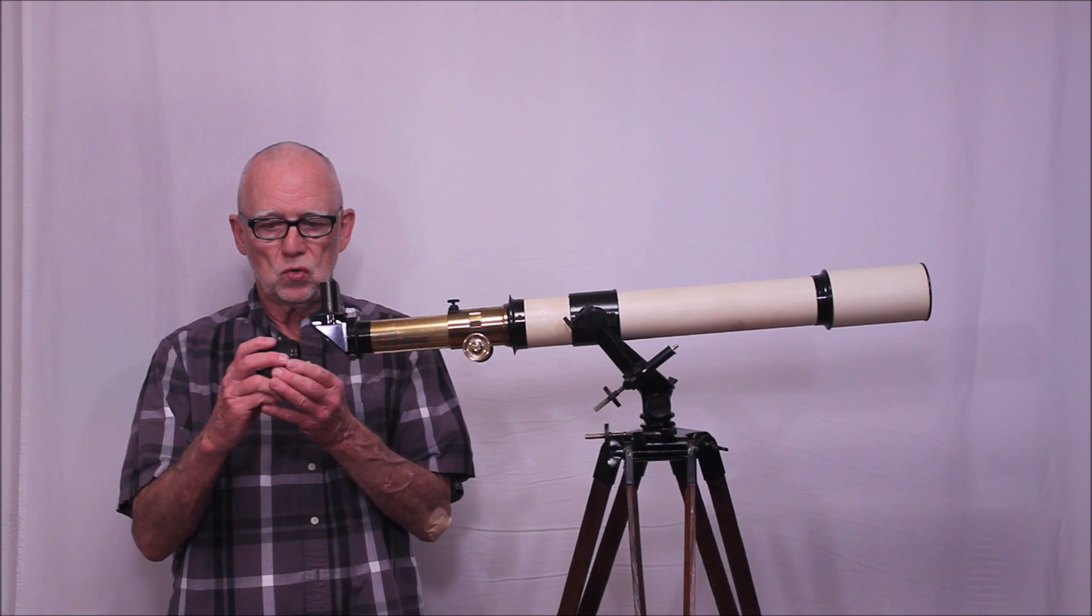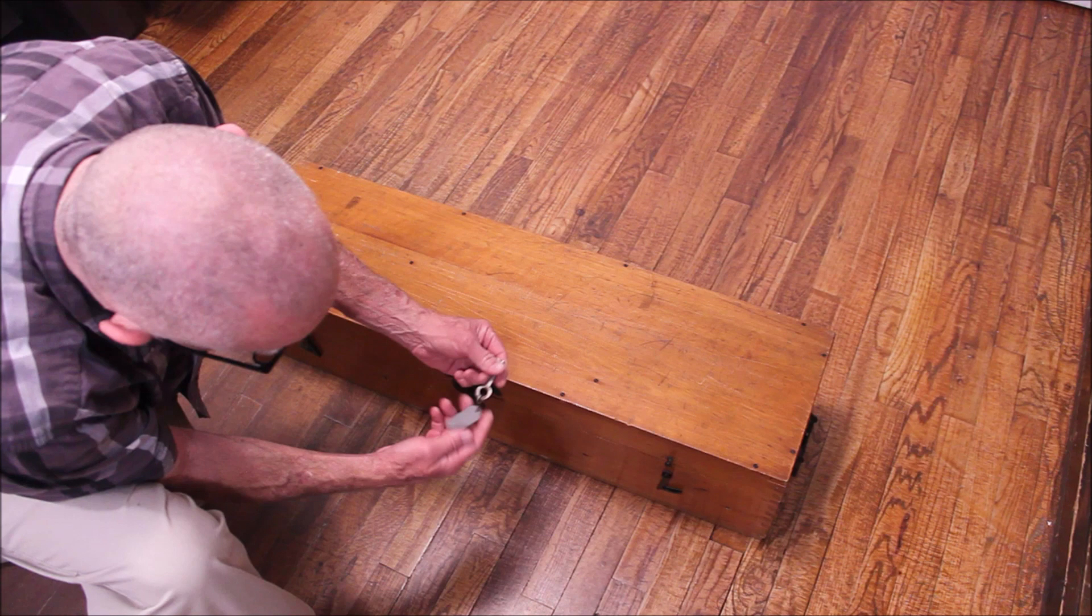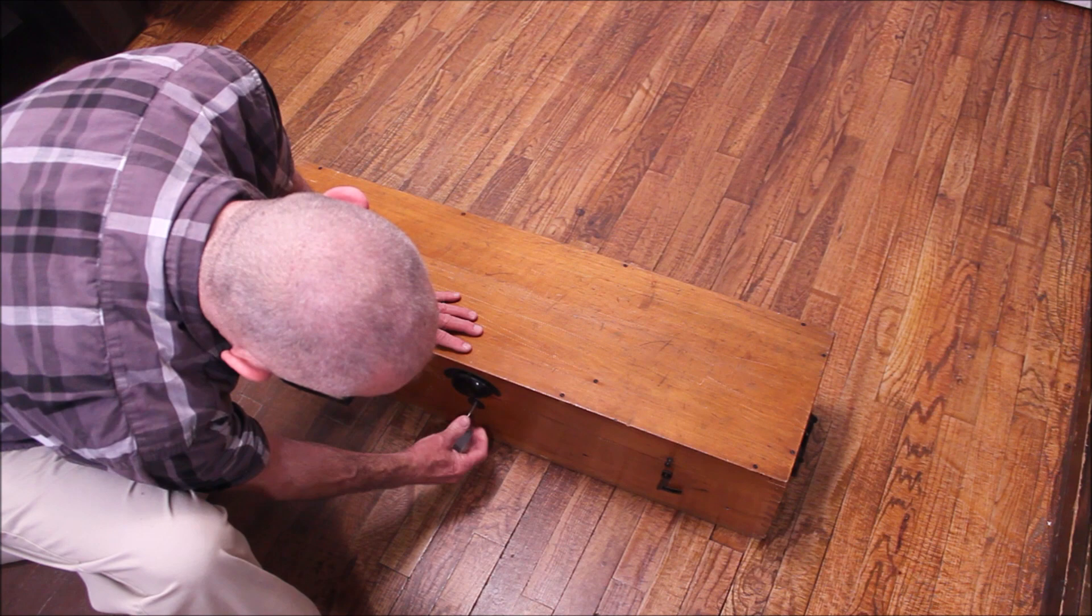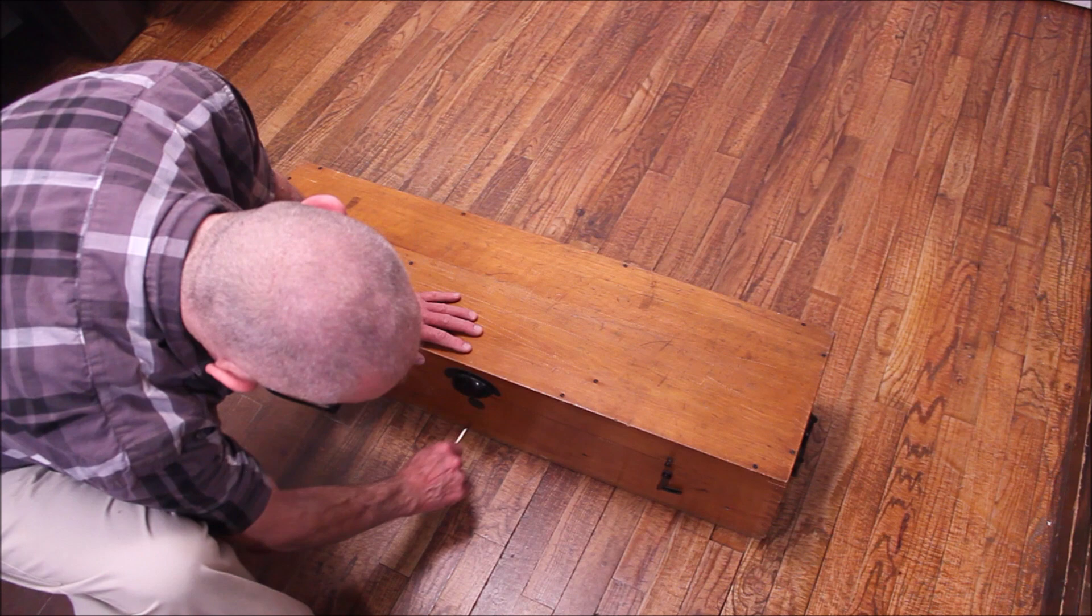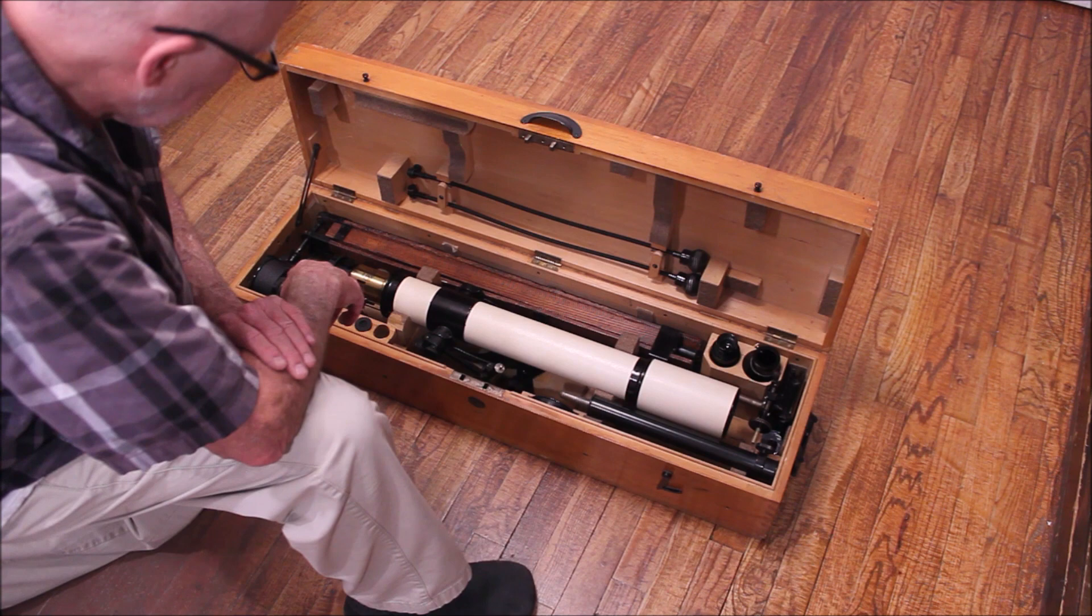All right, let's open up this Zeiss. First of all, this has got to be one of the most robust cases you'll ever see. And how many times do you see a case with a lock? This has a lock and key. Open it up. What a deal, huh? Now here we have the entire telescope. Unless you have some spare accessories, in which case those might be held separately. But this is pretty much the whole thing.